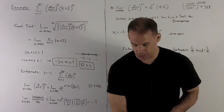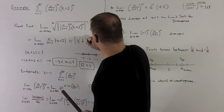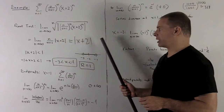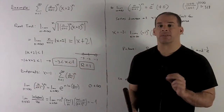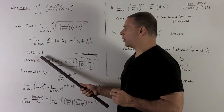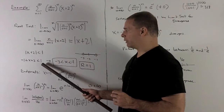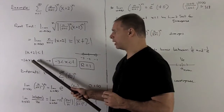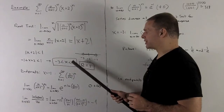Taking the limit as n goes to infinity, n over n+1 is just going to go to 1, so we're left with |x+2|. For the root test, we get convergence when this is strictly less than 1. Decoding the absolute value inequality: we put 1 on one side and -1 on the other, then subtract 2 from each term. That gives us -3 < x < -1.